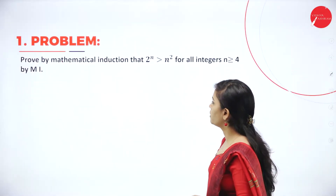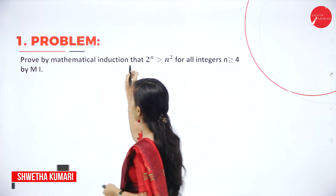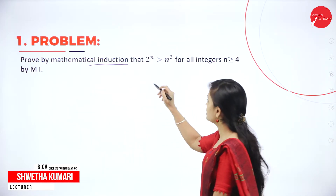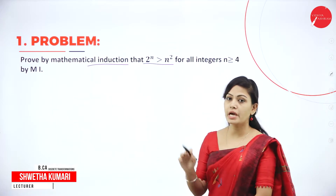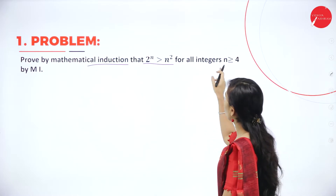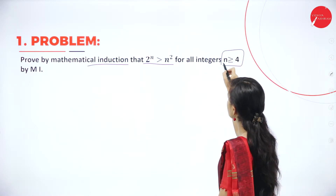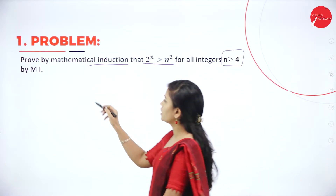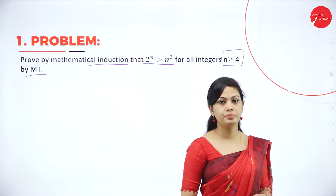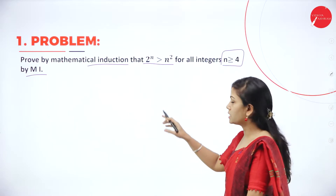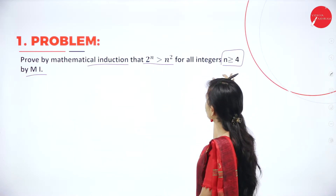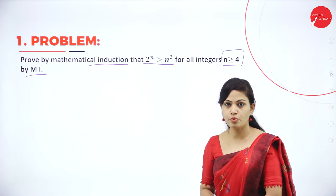So first problem: prove by mathematical induction that 2 power n is greater than n square. This type of question you can expect for 7 marks. For all integers n is greater than or equal to 4, prove by mathematical induction. We have the mathematical statement that is 2 power n greater than n square for all integers n is greater than or equal to 4.